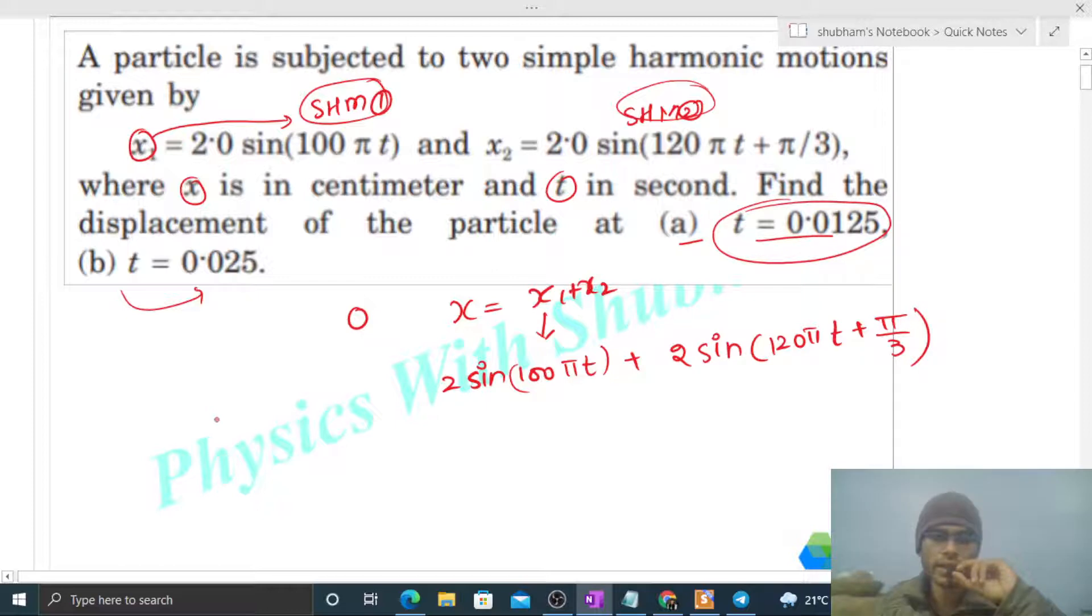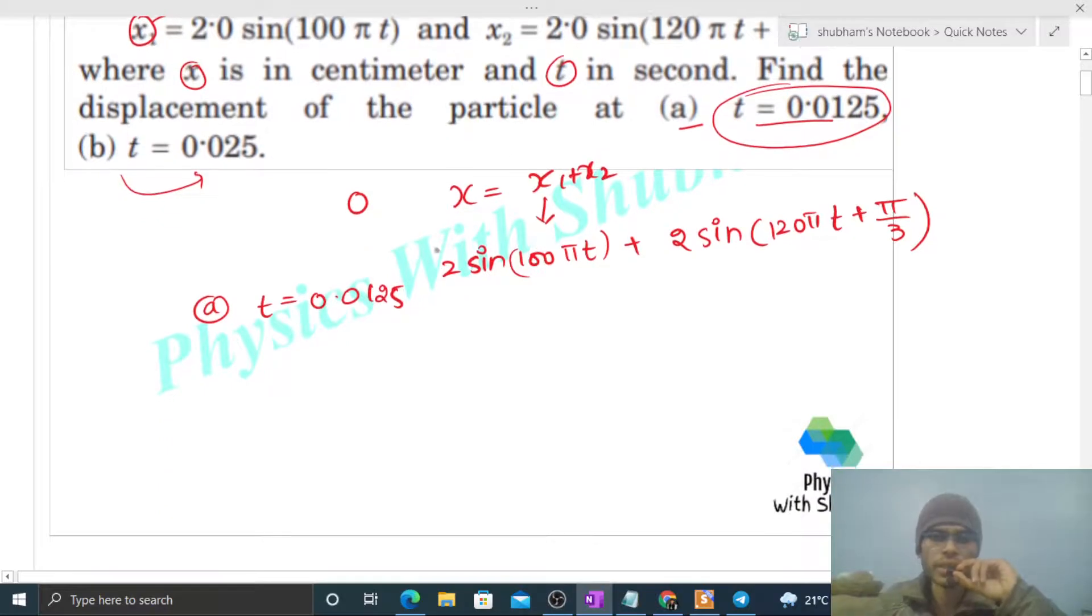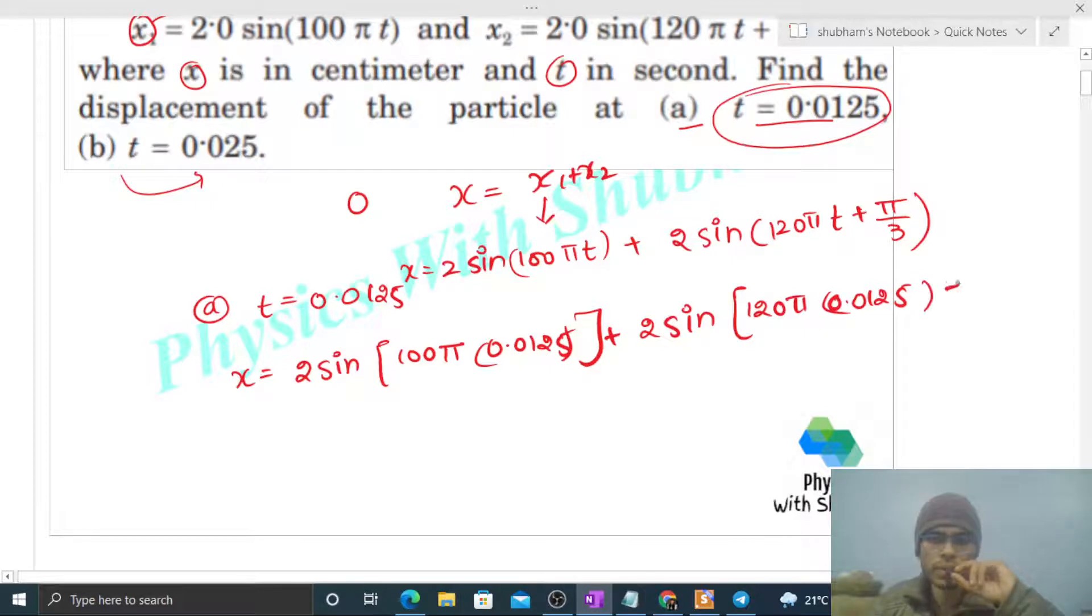We have to just put the values. Time is equal to 0.0125, so the displacement x will be simply 2 into sin 100 pi into t value 0.0125 plus 2 sin 120 pi into time 0.0125 plus pi by 3.